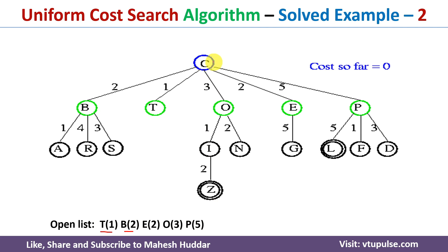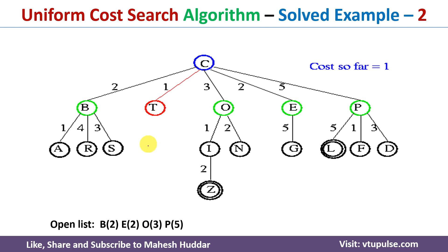We have explored the root node. Now we select the first node from the open list and explore it. The first node is T. I will remove T from the open list and add all possible paths from T. There are no paths from T, so nothing is added, but T is removed. We haven't reached the goal node yet.